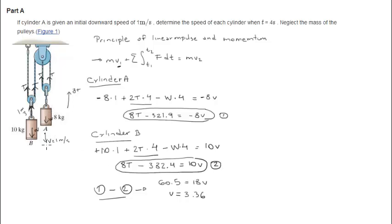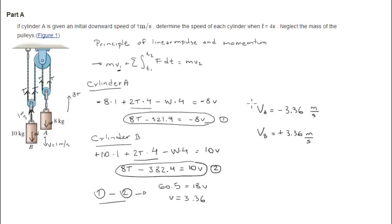Now, this one's going in the negative direction, so for cylinder A, it will be negative 3.36. And for cylinder B, it will be positive 3.36, because it's going upwards, and that is in meters per second. And this is the final answer.